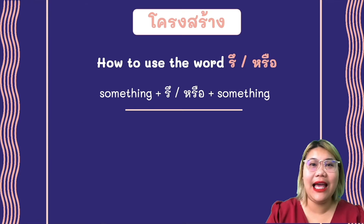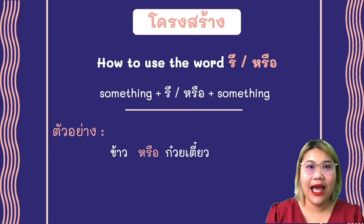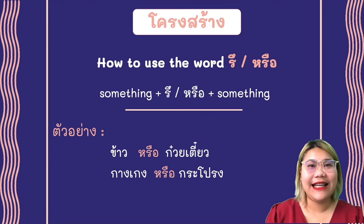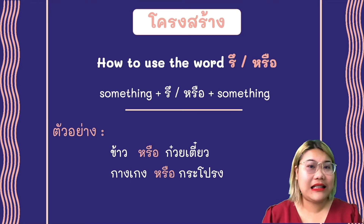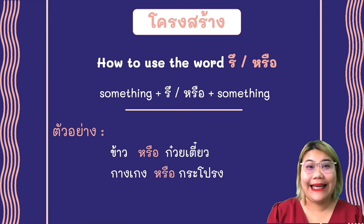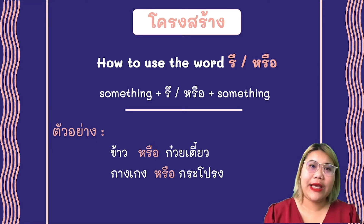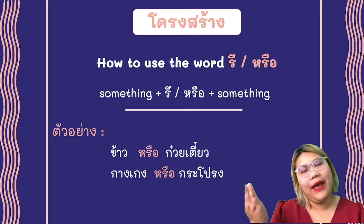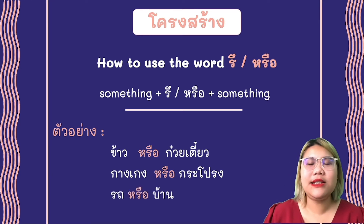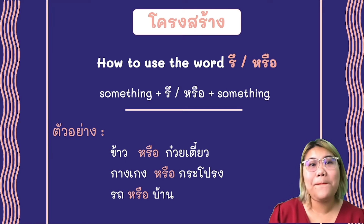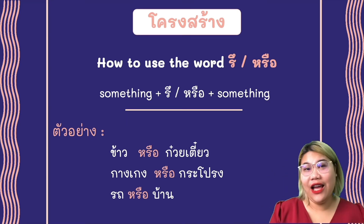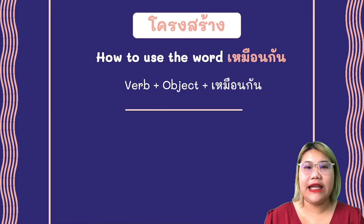มาดูตัวอย่างกันนะคะ. ตัวอย่างอันแรก: ข้าว หรือ กวยเตียว — rice or noodle. ข้าว หรือ กักโรง — ข้าว หรือ แฮง. แฮง is pants, and กระโปรง is skirt. So, pants or skirt. Next one is the car or the house.